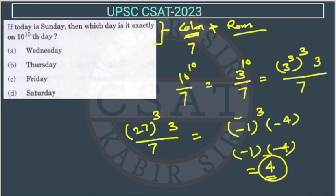So the odd days are 4. Sunday, Monday, Tuesday, Wednesday, Thursday. So from Sunday, plus 4 will be Thursday.